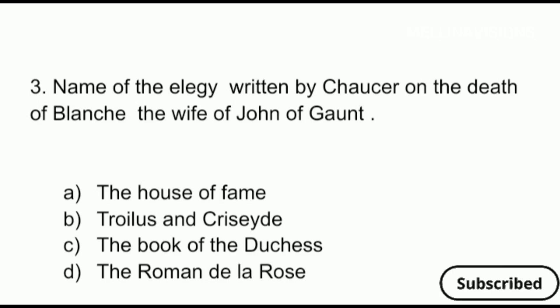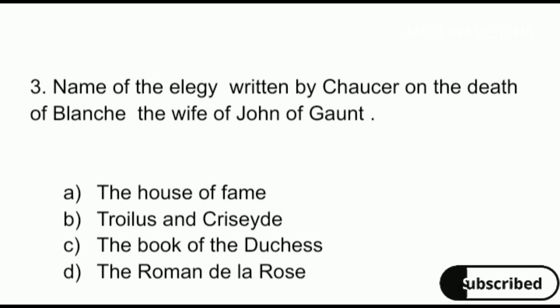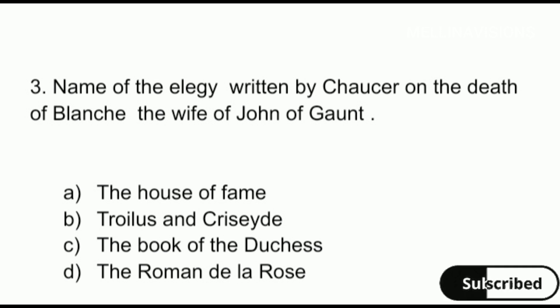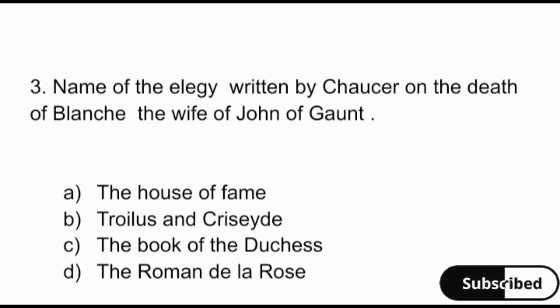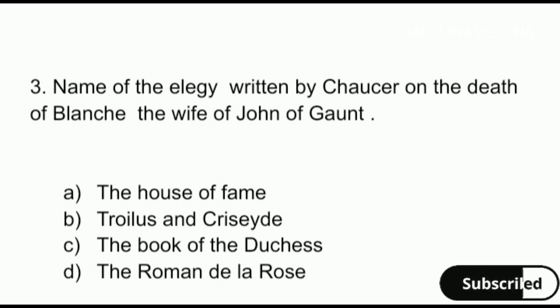Name of the elegy written by Chaucer on the death of Blanche, the wife of John of Gaunt. Options are: A. The House of Fame, B. Troilus and Criseyde, C. The Book of the Duchess, D. The Roman de la Rose.